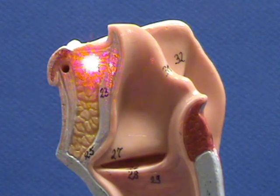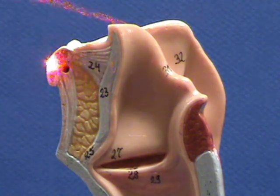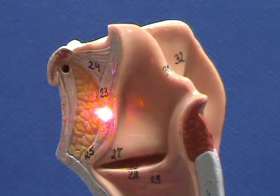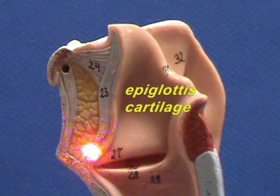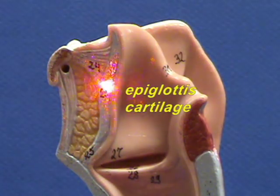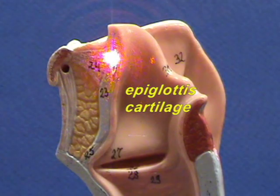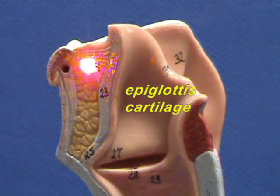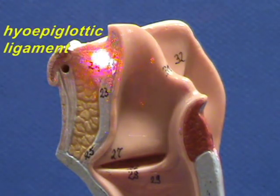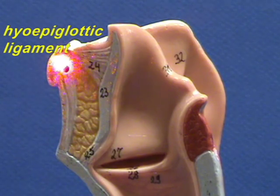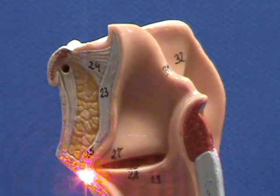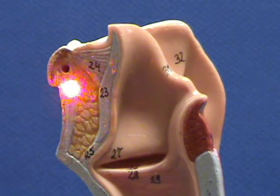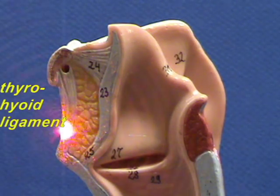One right over here connects the hyoid bone to the epiglottis — so here is the epiglottic cartilage — and this would be the hyoepiglottic ligament. Here the hyoid bone is connected to the thyroid cartilage, which is over here, by the thyrohyoid ligament.